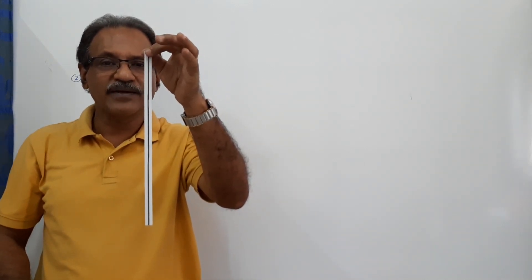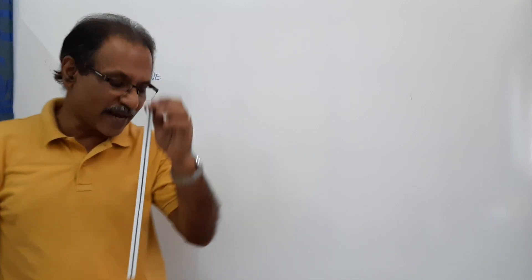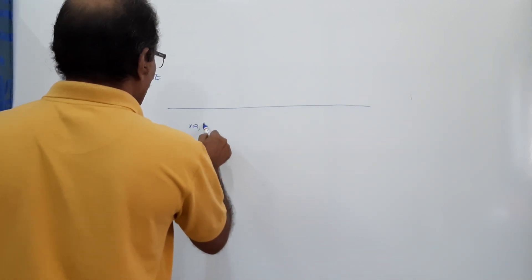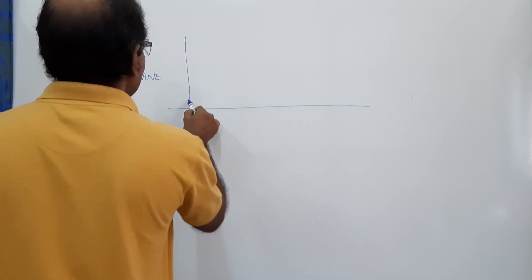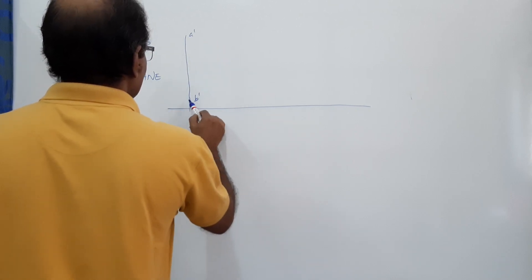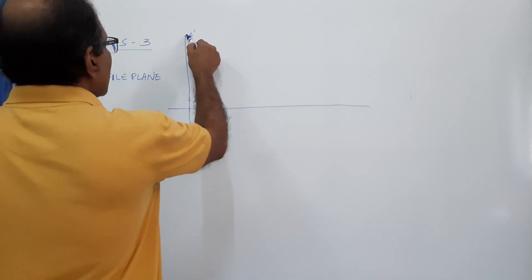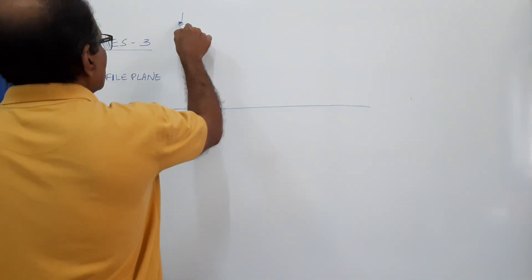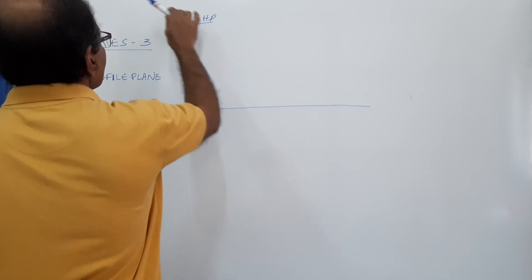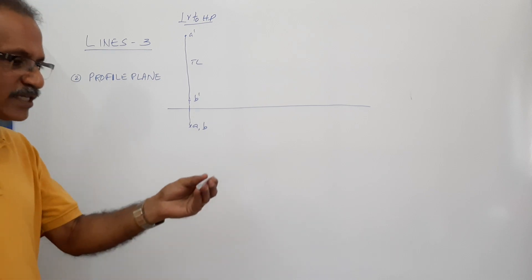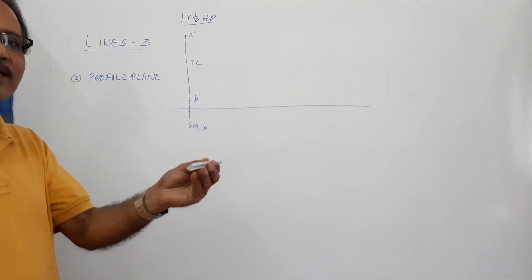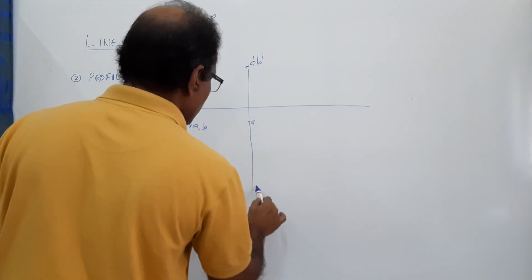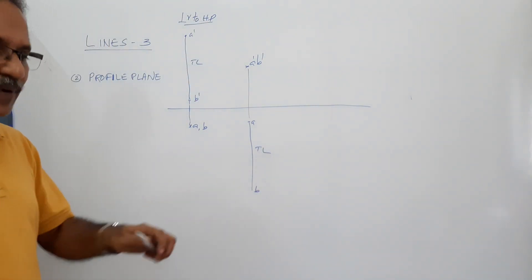Case 1: I am holding the line perpendicular to HP in the profile plane. Its plan is a point (a, b) and its elevation is a line of true length perpendicular to XY. Case 2: The line is perpendicular to VP in the profile plane. The elevation is a point (a', b') and the plan is a line of true length perpendicular to XY.